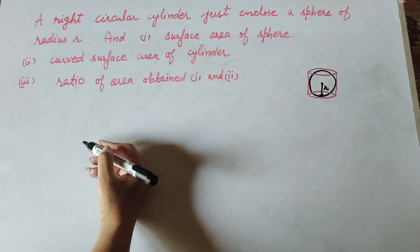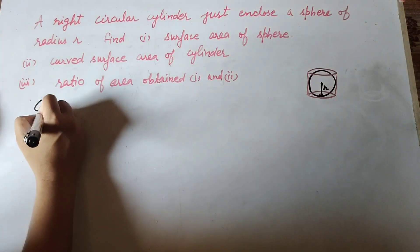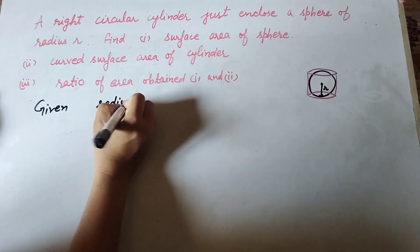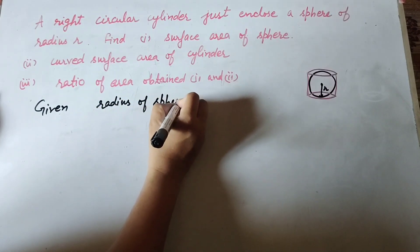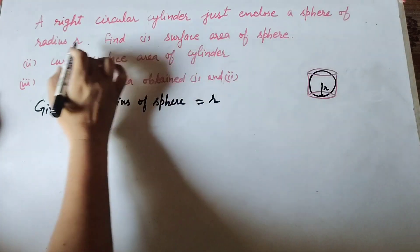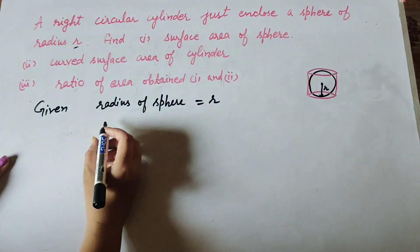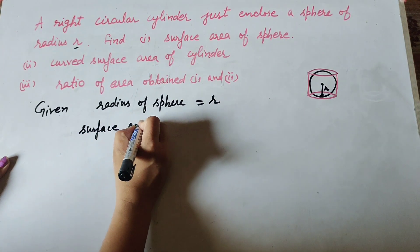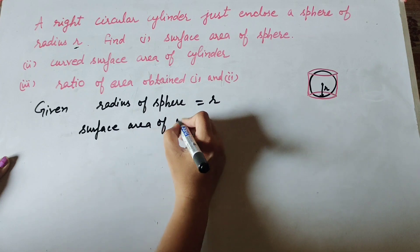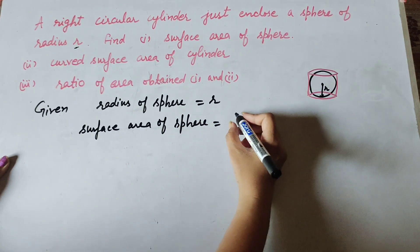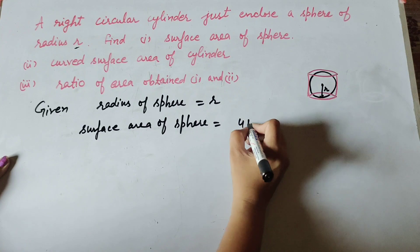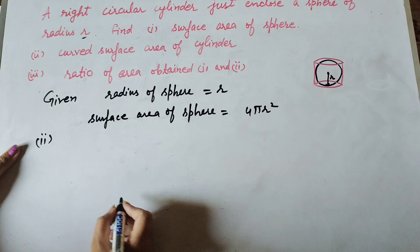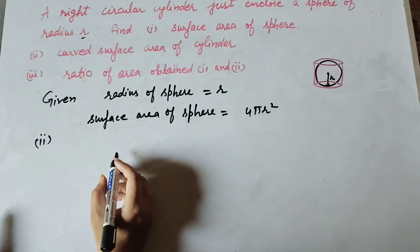We find the surface area of the sphere. Given: the radius of the sphere is r. The surface area of the sphere is equal to 4πr². So 4πr² is the surface area of the sphere. Now we move to the second part.